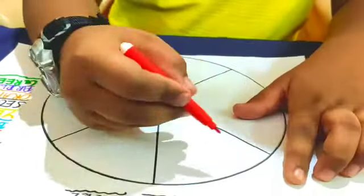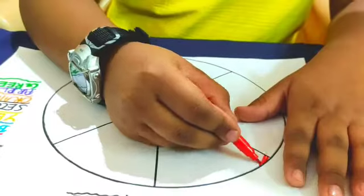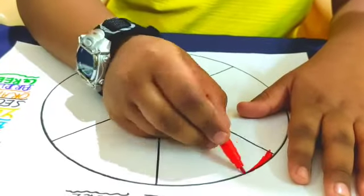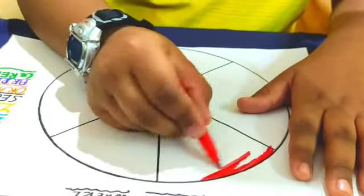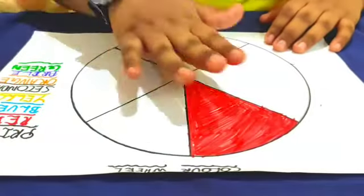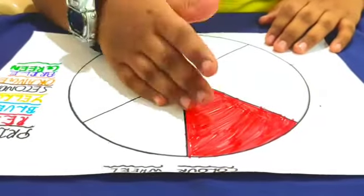So now I am taking the sketch and here I am going to color. Okay, my red primary color is done.